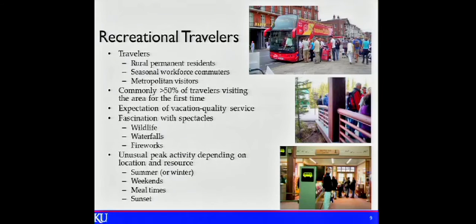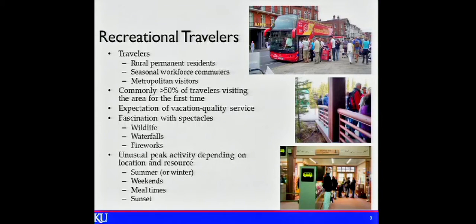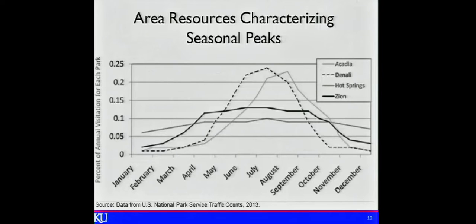Visitors expect vacation quality service — they're on vacation and don't want to sit in traffic. They won't go back or tell friends to go if they had a miserable time. Fascination with spectacles also creates distracted drivers. When Zion National Park was about to put in their transit system and restrict private vehicles, they had 2,000 cars a day vying for 500 parking spaces — with kids running across the road while drivers stared at the canyon. Safety hazards were terrible. You have distracted folks even without a smartphone.